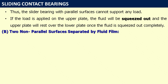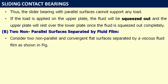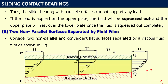Now let us discuss the second experiment: two non-parallel surfaces separated by a fluid film. Consider two non-parallel and convergent flat surfaces separated by a viscous fluid film as shown in the figure. The upper plate is parallel to the x-axis whereas the stationary plate is inclined at a particular angle, so these two surfaces form a convergent film at the two sections.